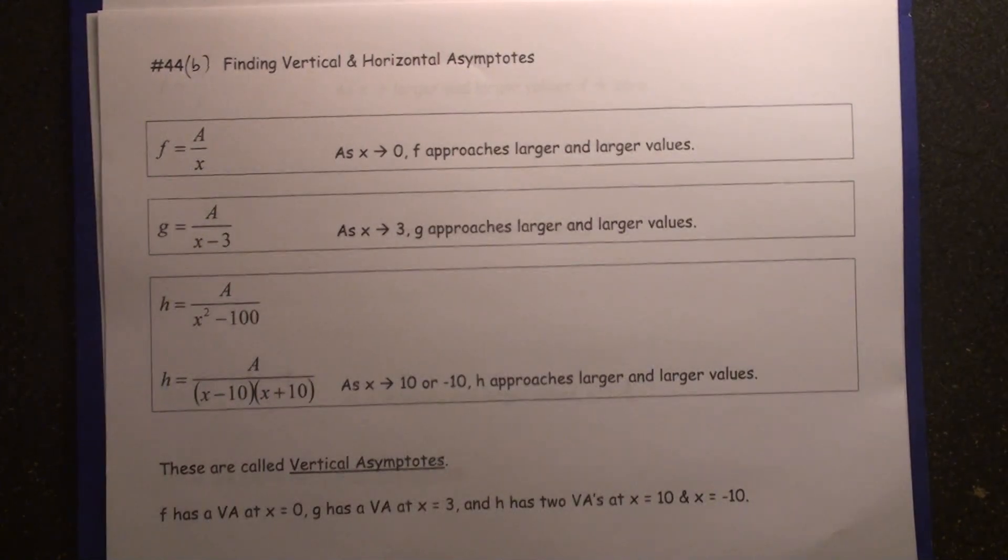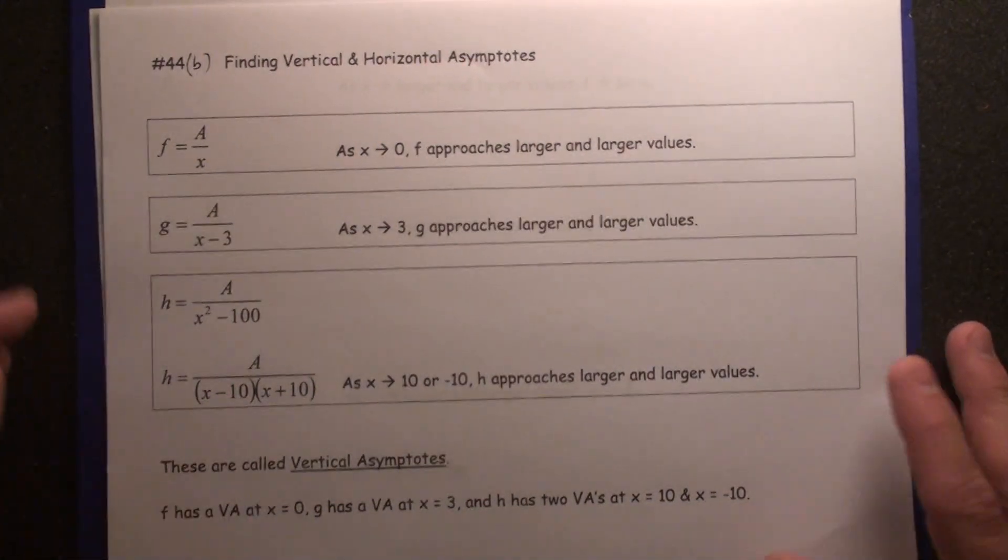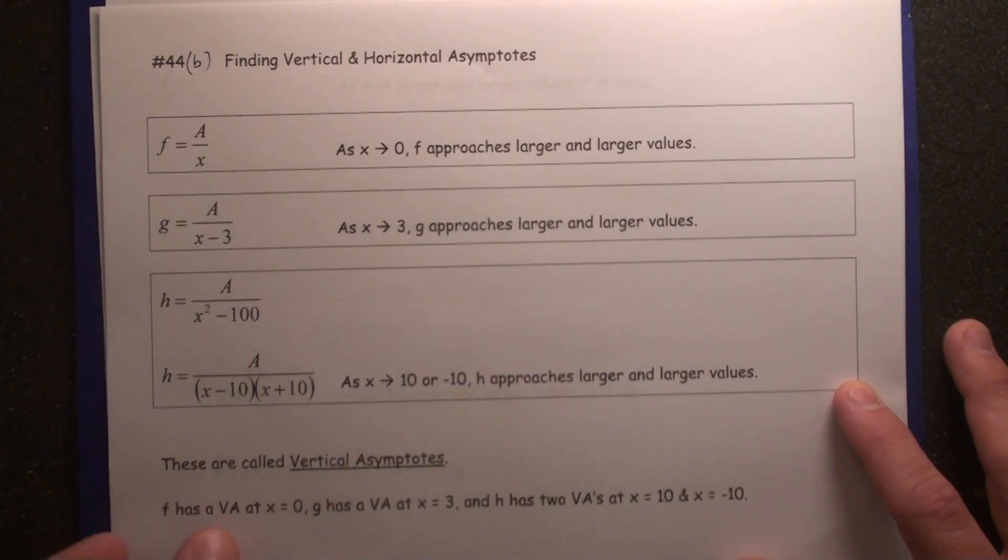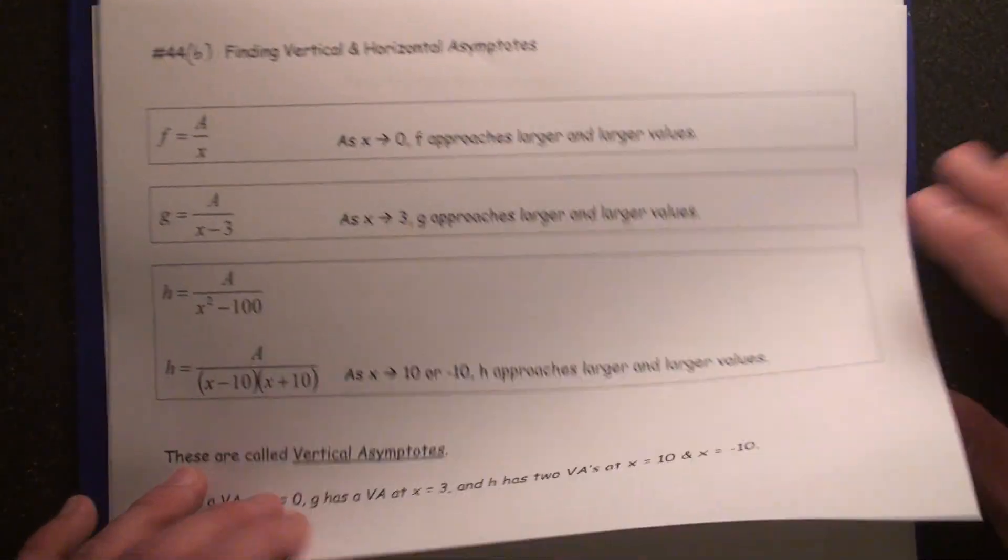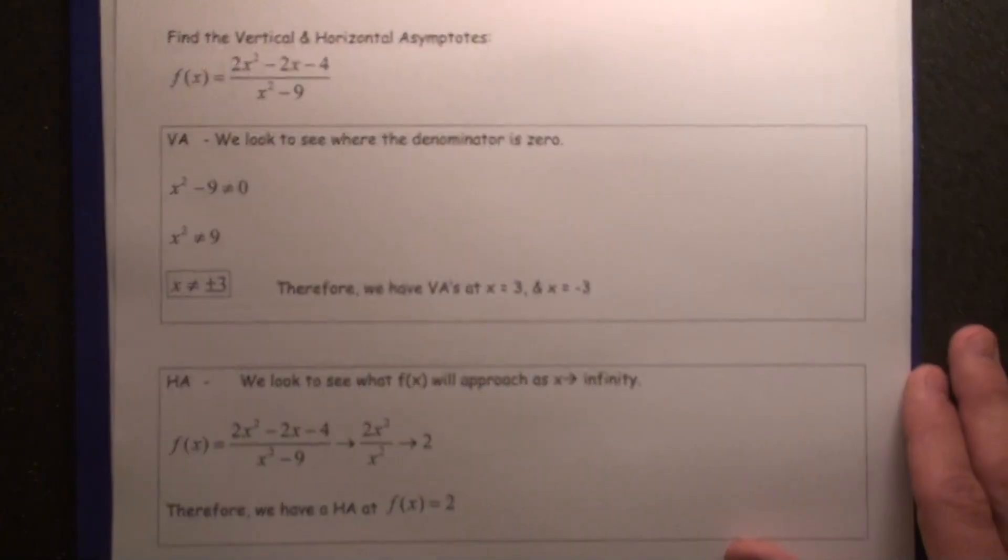Video number 44, part B, finding vertical and horizontal asymptotes. In the first one, we just went through the first page here, talking about as x approaches different values and what the definition of a vertical and horizontal asymptote is.